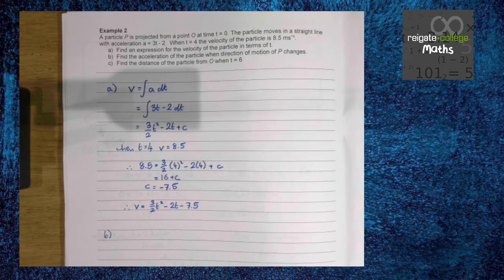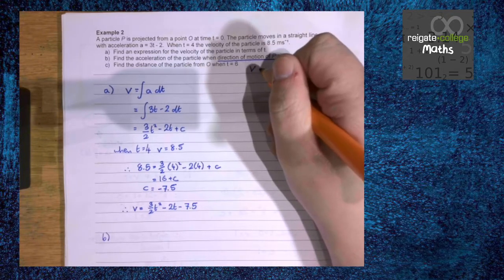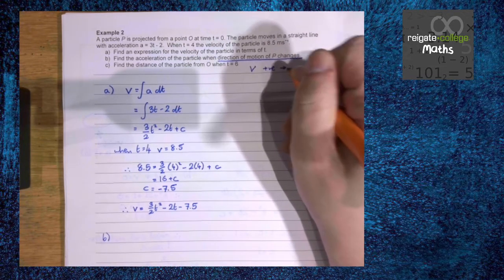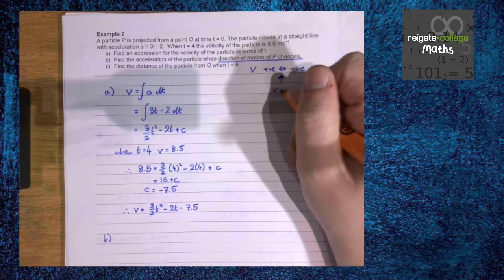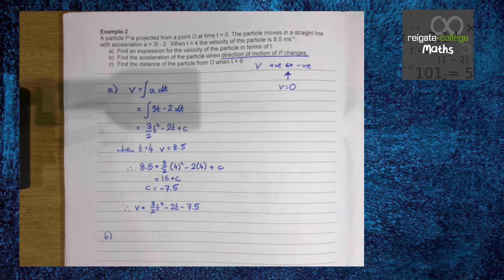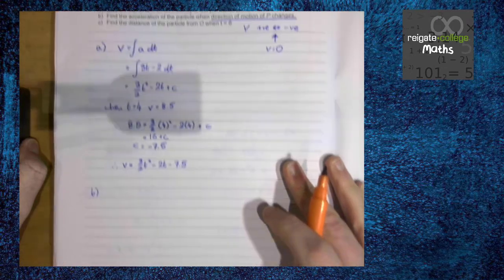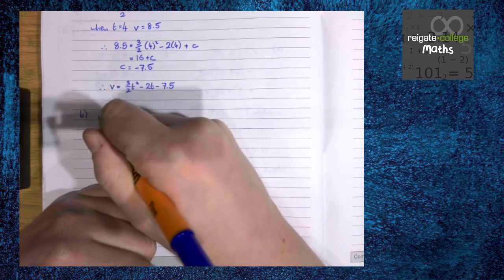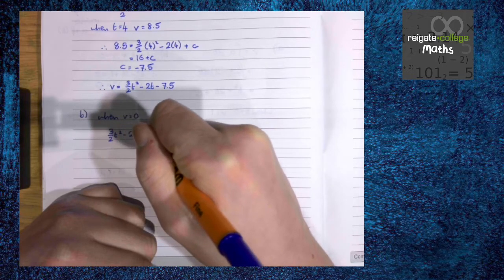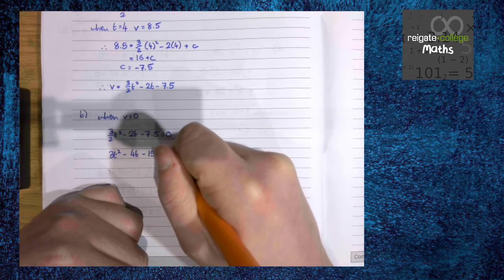Find the acceleration of the particle when the direction of motion of p changes. So this is when v goes from positive to negative, or vice versa. The point where this happens is when v is at rest. So what we need to find is the time when the particle is at rest, and then find the acceleration at that time. When v equals 0, we get 3 over 2, t squared minus 2t minus 7.5 equals 0. So 3t squared minus 4t minus 15 equals 0.